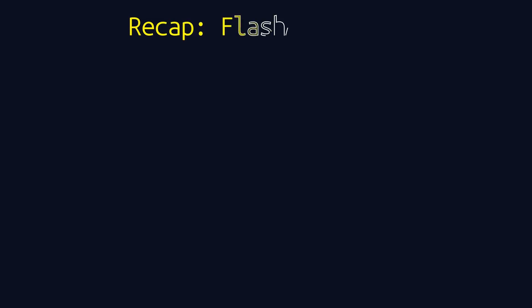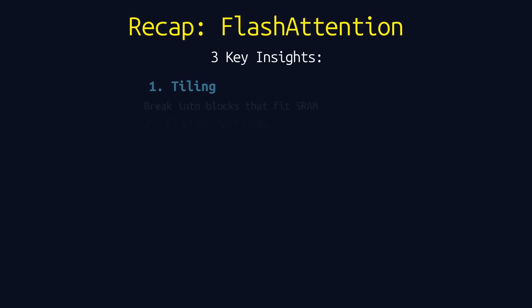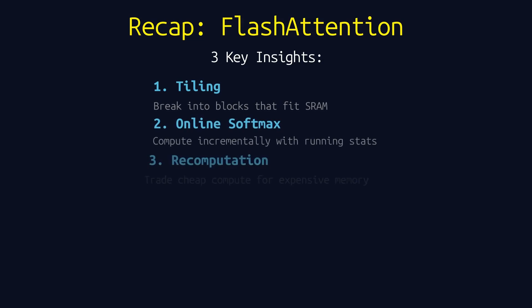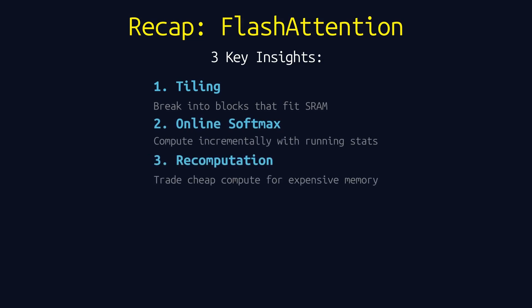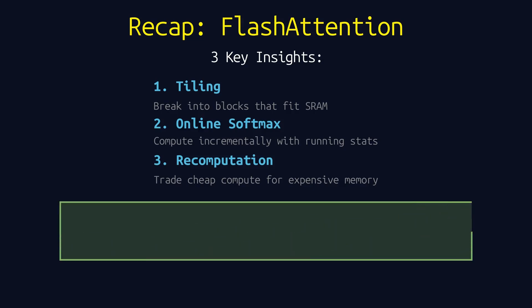Let's recap. Three key insights enable Flash Attention. 1: Tiling — break the attention matrix into blocks that fit in fast SRAM. 2: Online softmax — compute softmax incrementally with running statistics, no need to see the full row. 3: Recomputation — trade cheap GPU compute for expensive memory bandwidth by recomputing attention scores in the backward pass. The result: less memory, up to 4 times faster inference, and exact results — not an approximation.